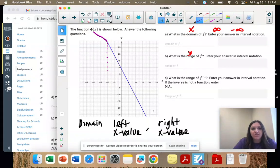So if it goes forever and ever this way, what x value is that going to end at? That's what you're asking yourself. Where's the end? It's negative infinity. That's our most left x value.